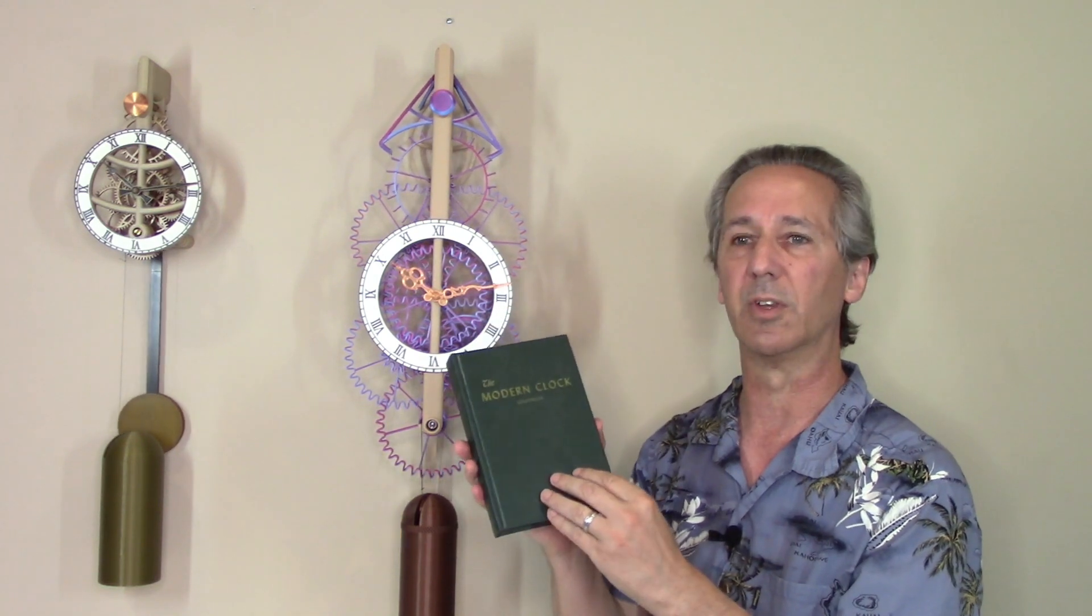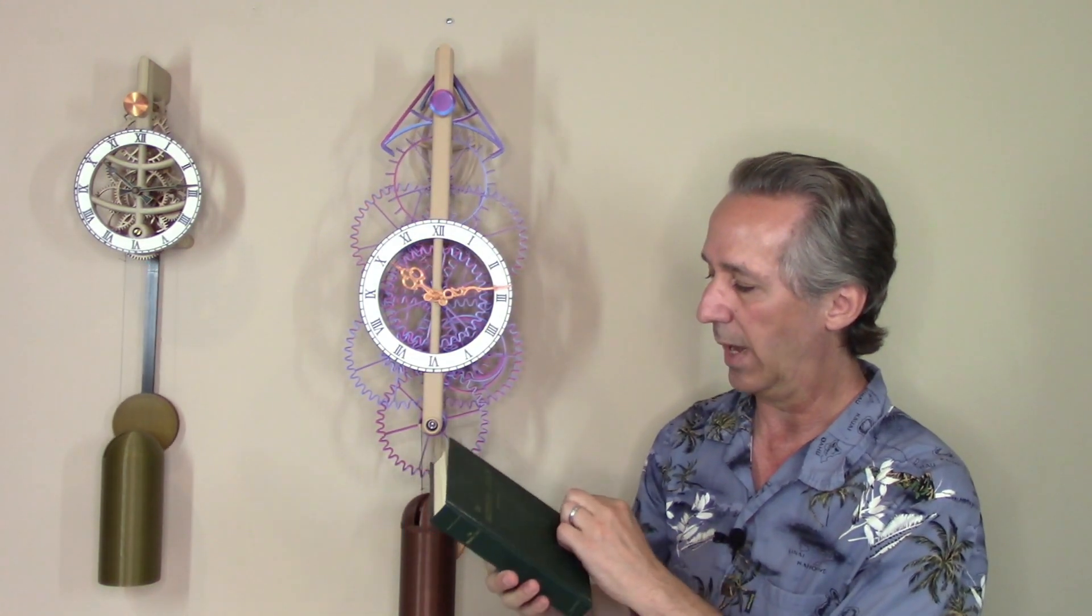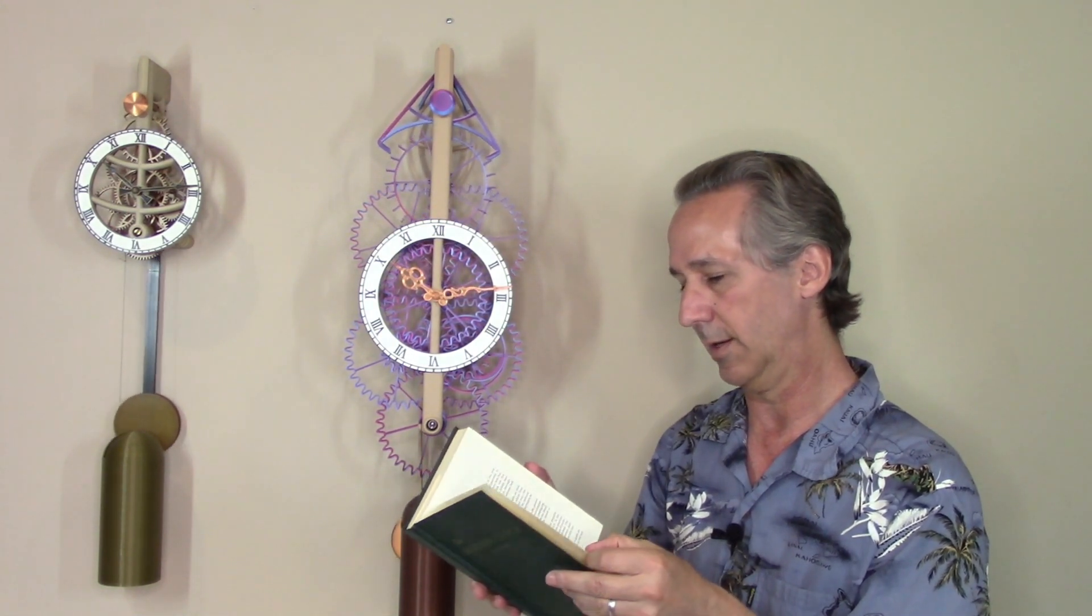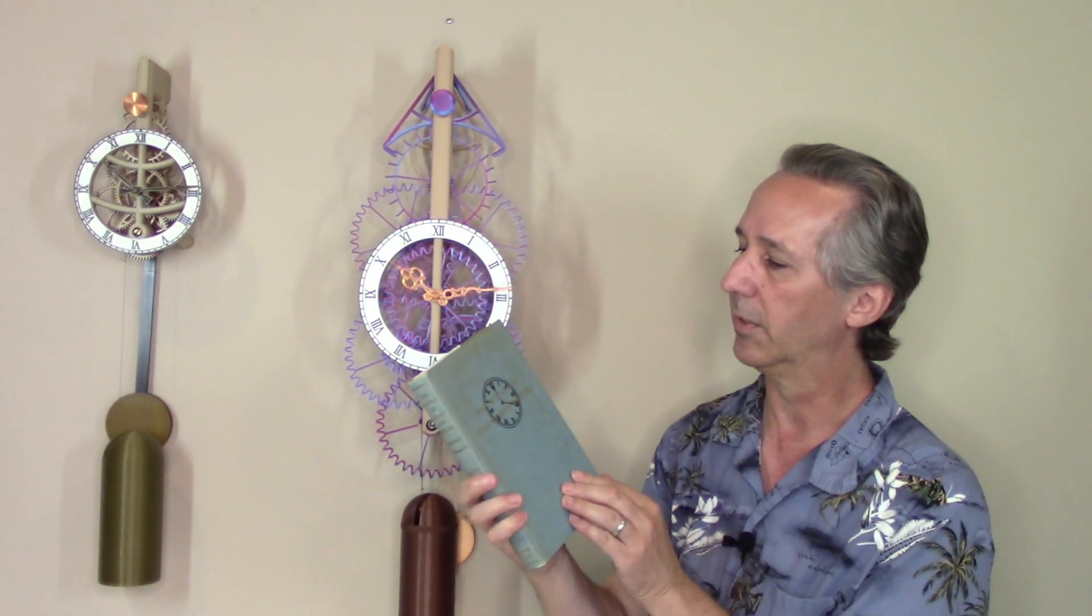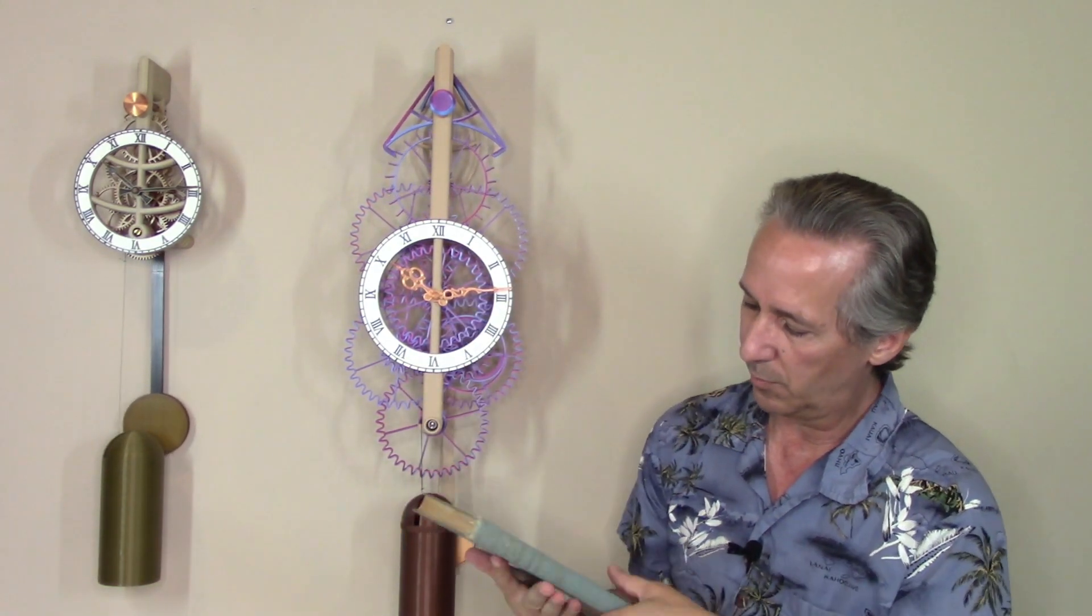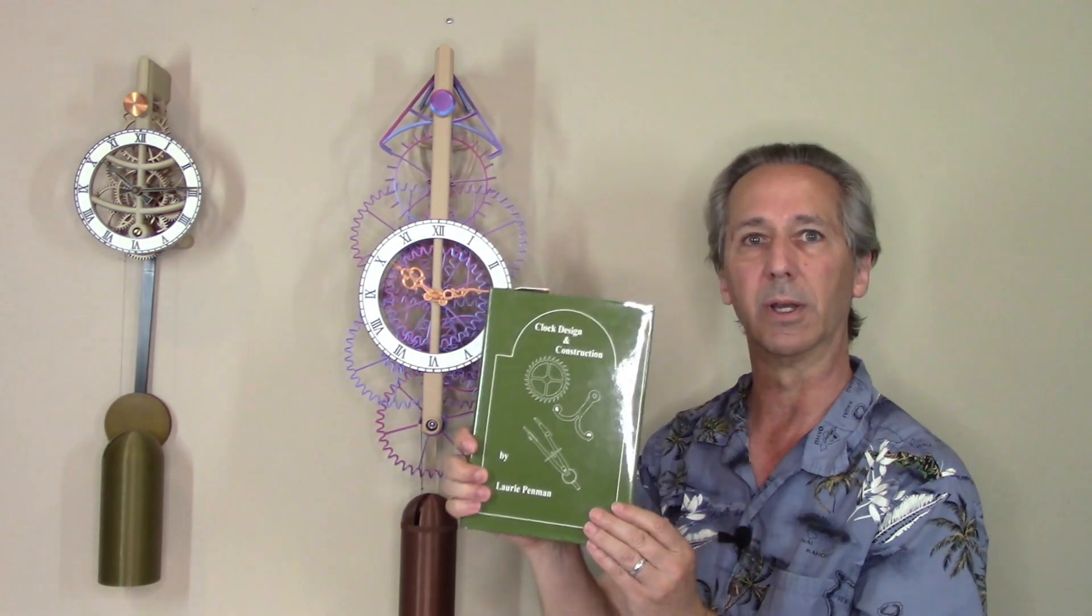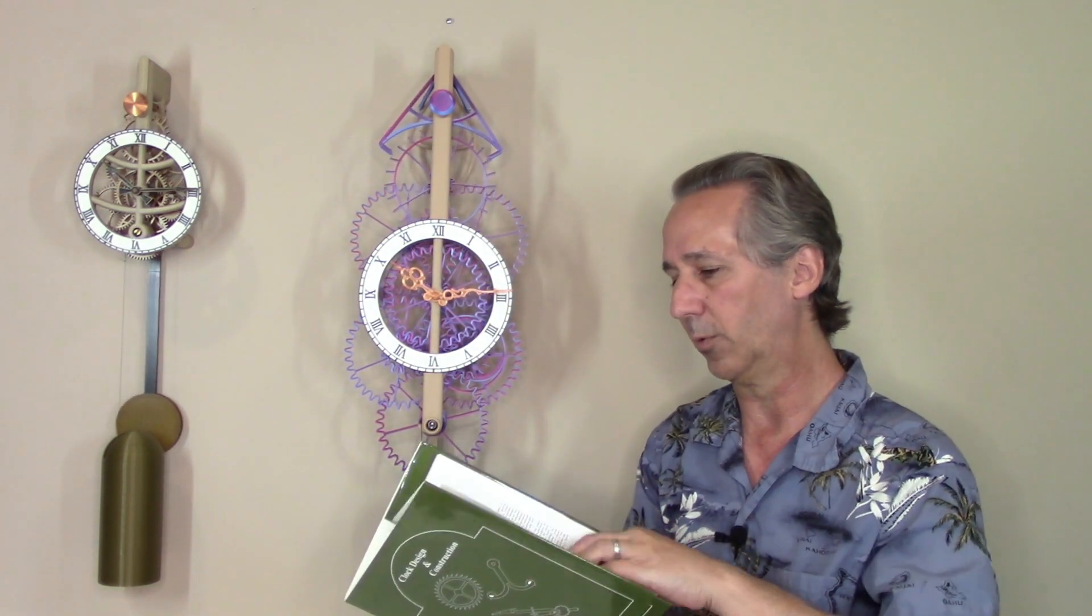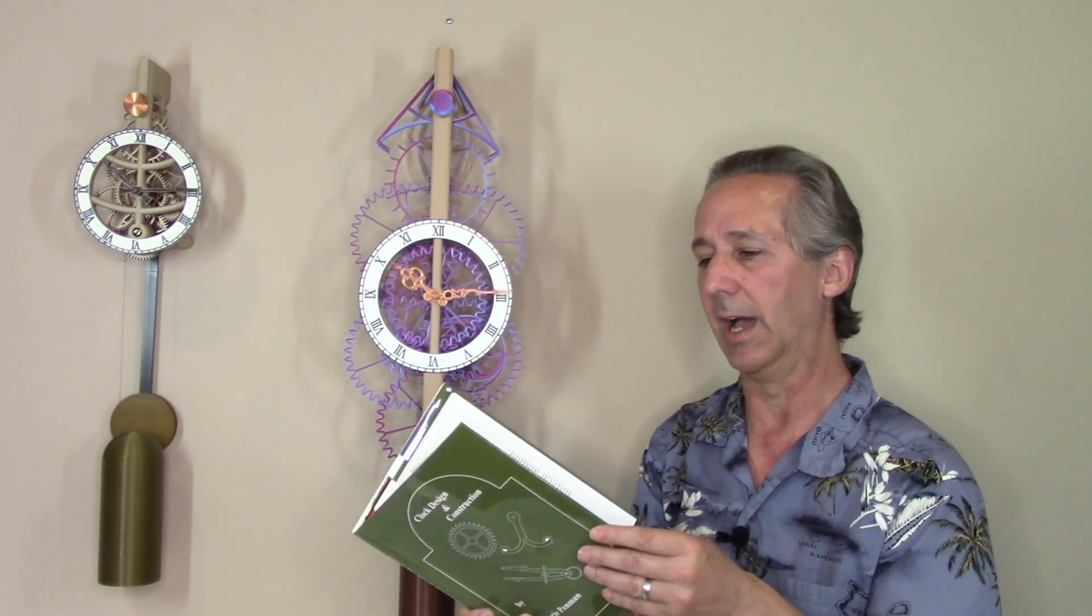There are lots of books available on clock making. Here's a couple that I really like. One is called The Modern Clock by Goodrich. I believe this one was written in 1950. Another book is called The Science of Clocks and Watches by Rawlings, written in 1948. Another more recent book is called Clock Design and Construction by Laurie Penman, written in 1984 but published again in 1989 and 2002.